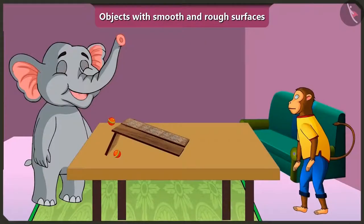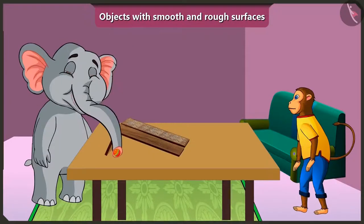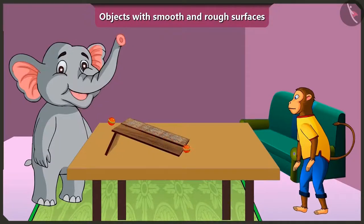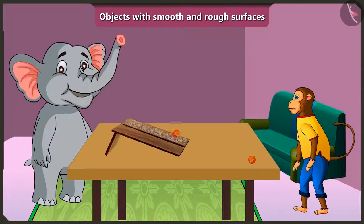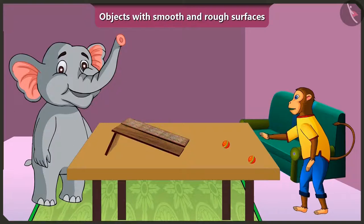Yes, now I understood. The ball rolls faster on this wooden slope because this slope has a smooth surface. And the ball rolls slowly on this slope because this slope has a rough surface — its surface is very rough. Well done, Appu!